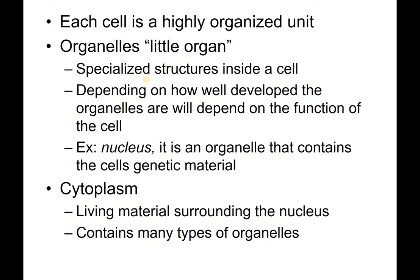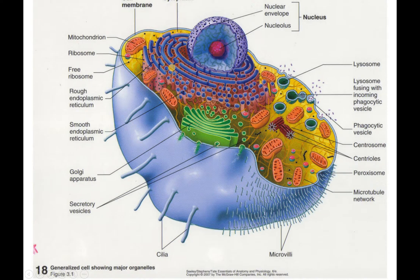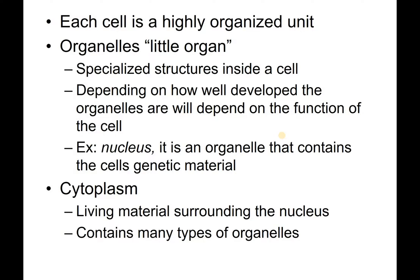Organelles, which translates to 'little organ,' are specialized structures inside the cell. All of these components inside the cell are considered organelles — they're what help the cell work. The nucleus, as an example, is an organelle that contains the genetic material. The cytoplasm is the living material that surrounds the nucleus.